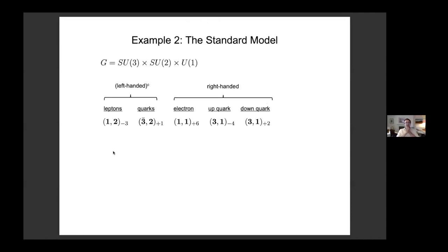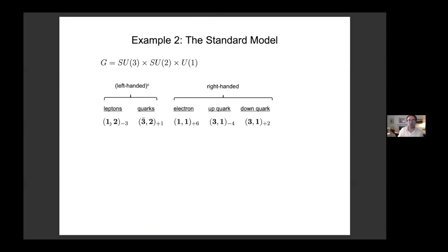Let me do the second example — the second most simple, but by far the most interesting — this is the Standard Model. Here's one generation of fermions; I didn't include the right-handed neutrino because it's neutral under everything, so you just give it a Majorana mass and it decouples. I've written everything as right-handed: what you'd think of as left-handed, I've conjugated so they're right-handed — that shows up as this being in the three-bar rather than the three. So everything here is a right-handed Weyl fermion. The question is: how do you introduce new degrees of freedom that give everything a mass but without breaking G?